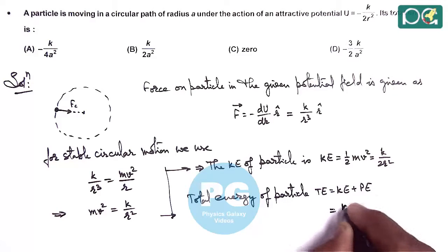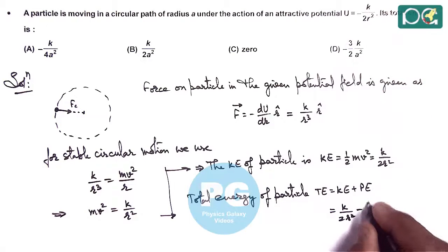So KE = K/(2R²) and PE = -K/(2R²), which sum to zero. Therefore, the answer is option C.